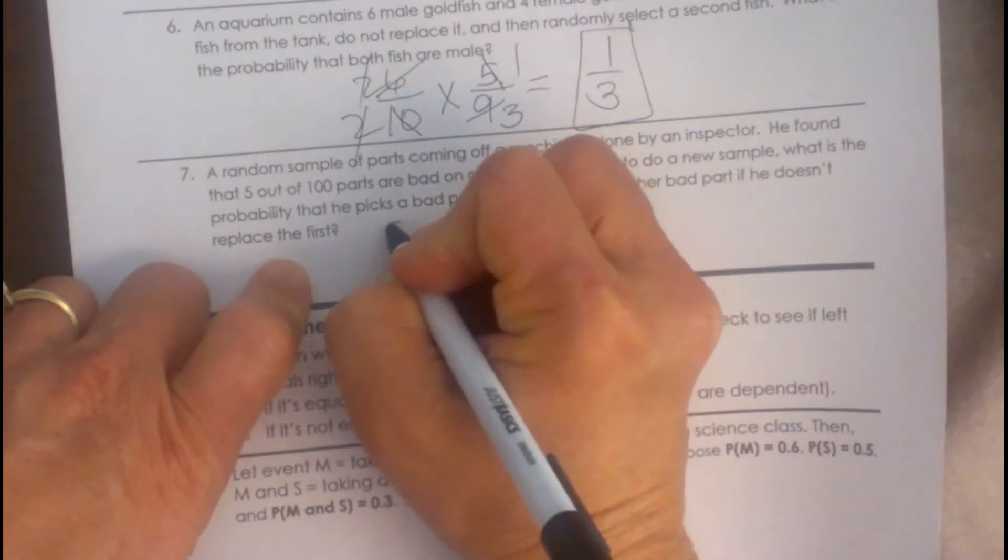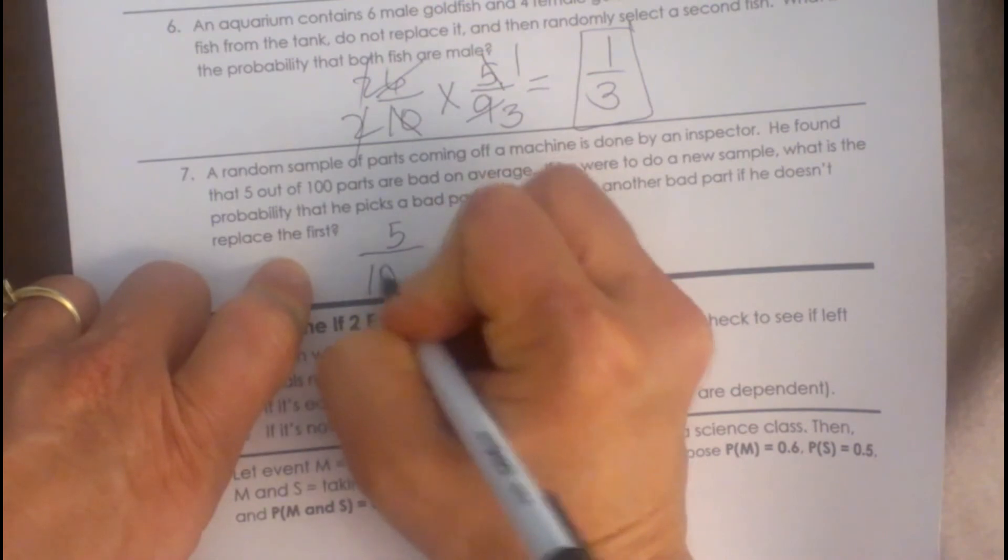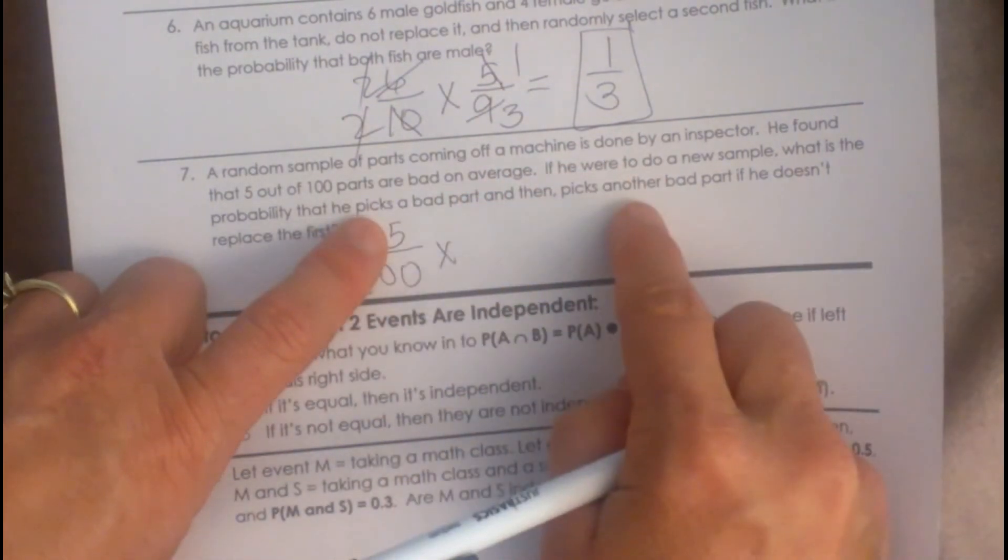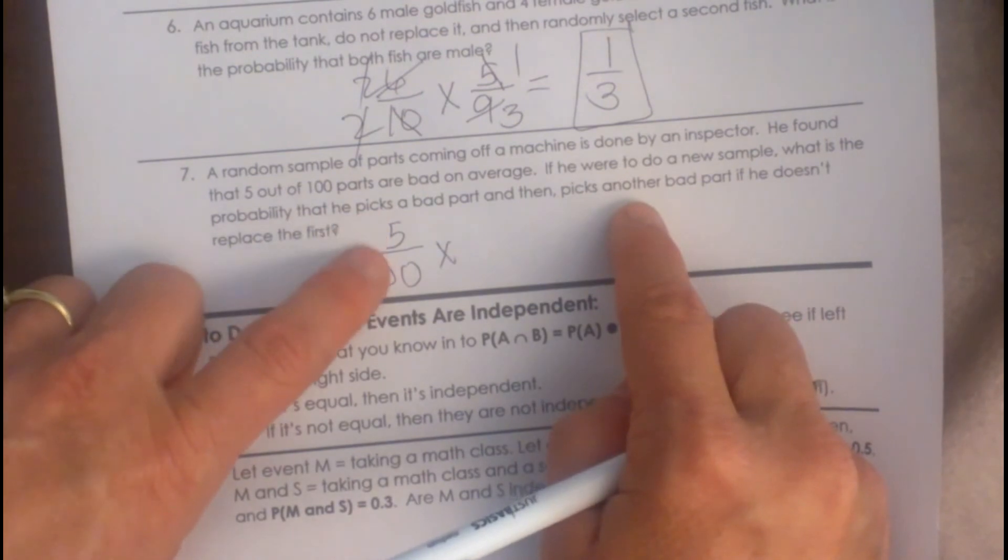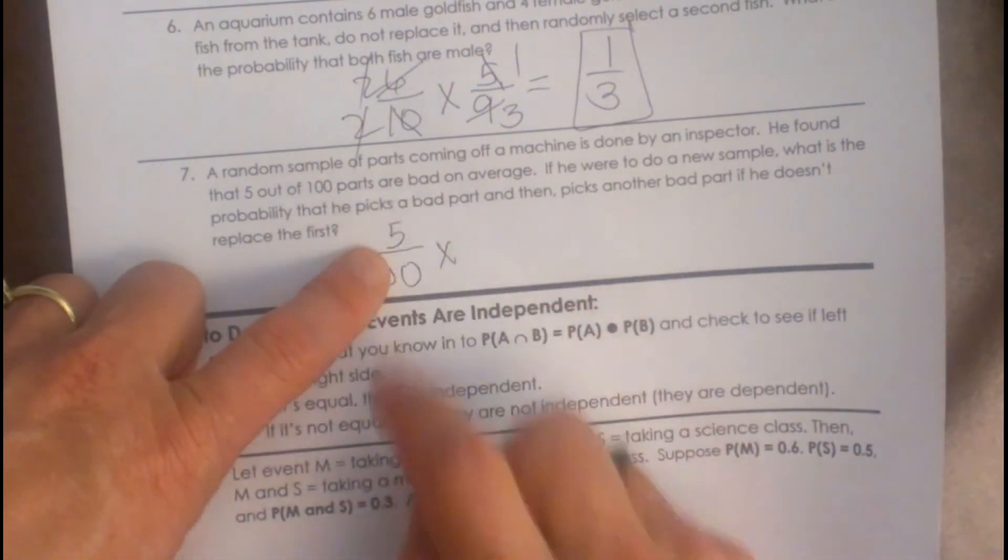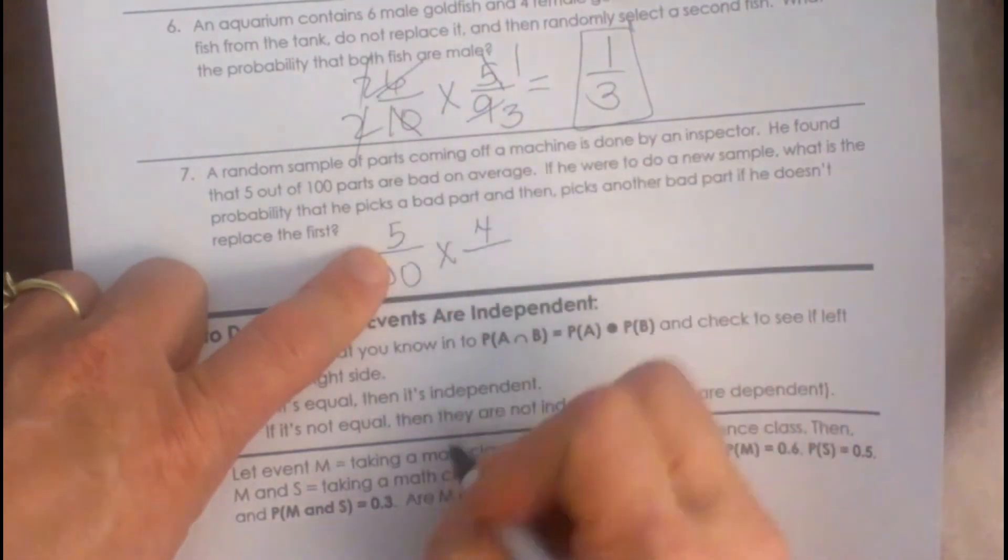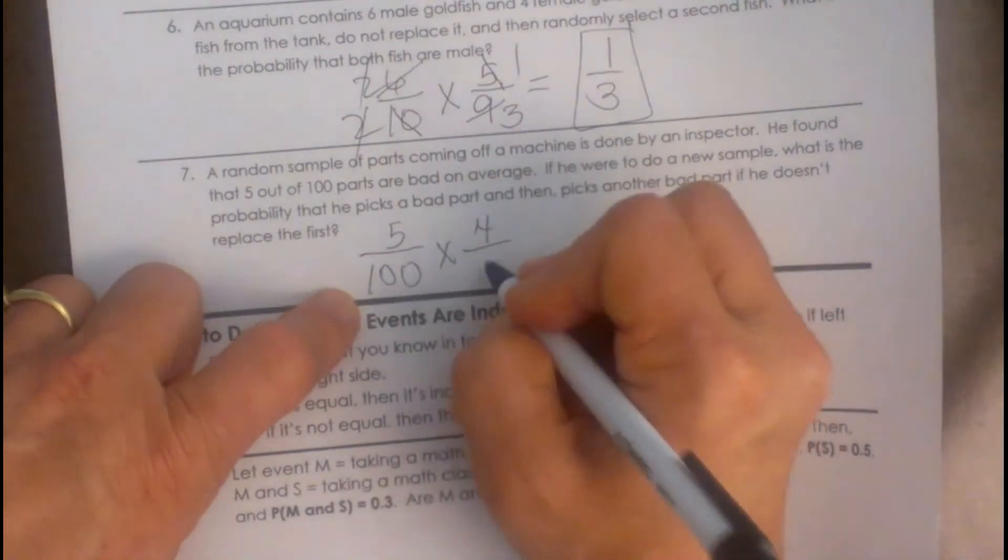Well the first one is 5 out of 100. And then the second one, let's see, if he picks a bad part and he does not put it back. So we are assuming he picked a bad part. So that means there is 4 bad parts left out of 99.